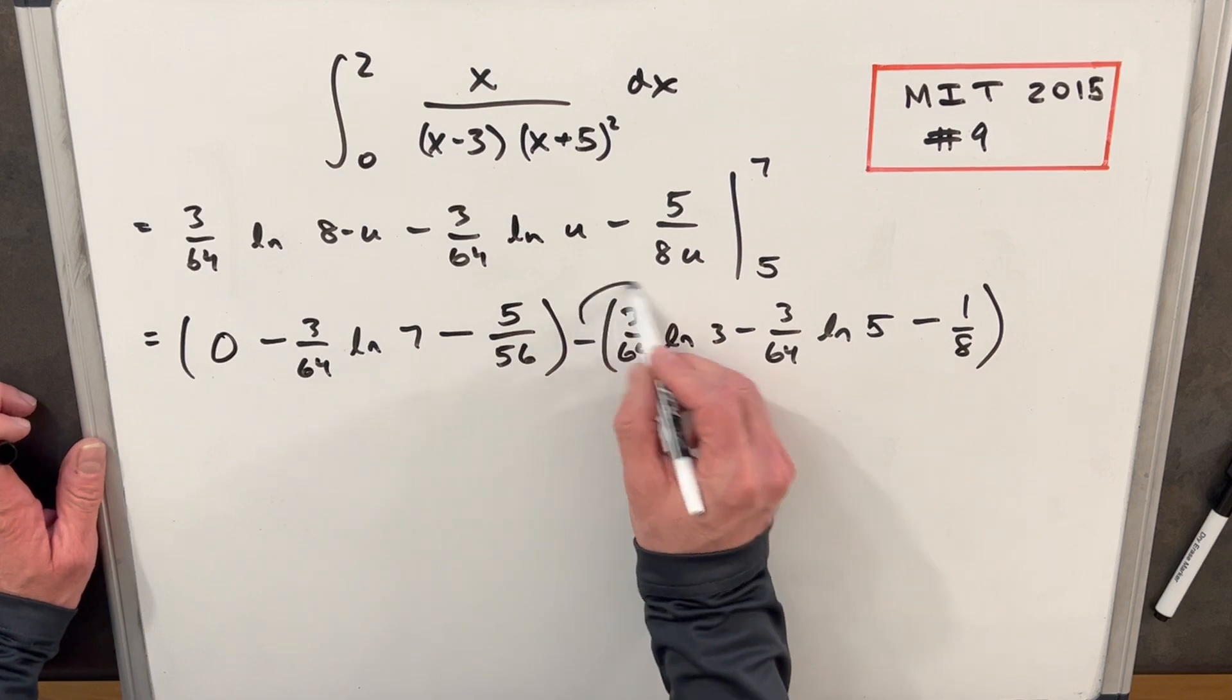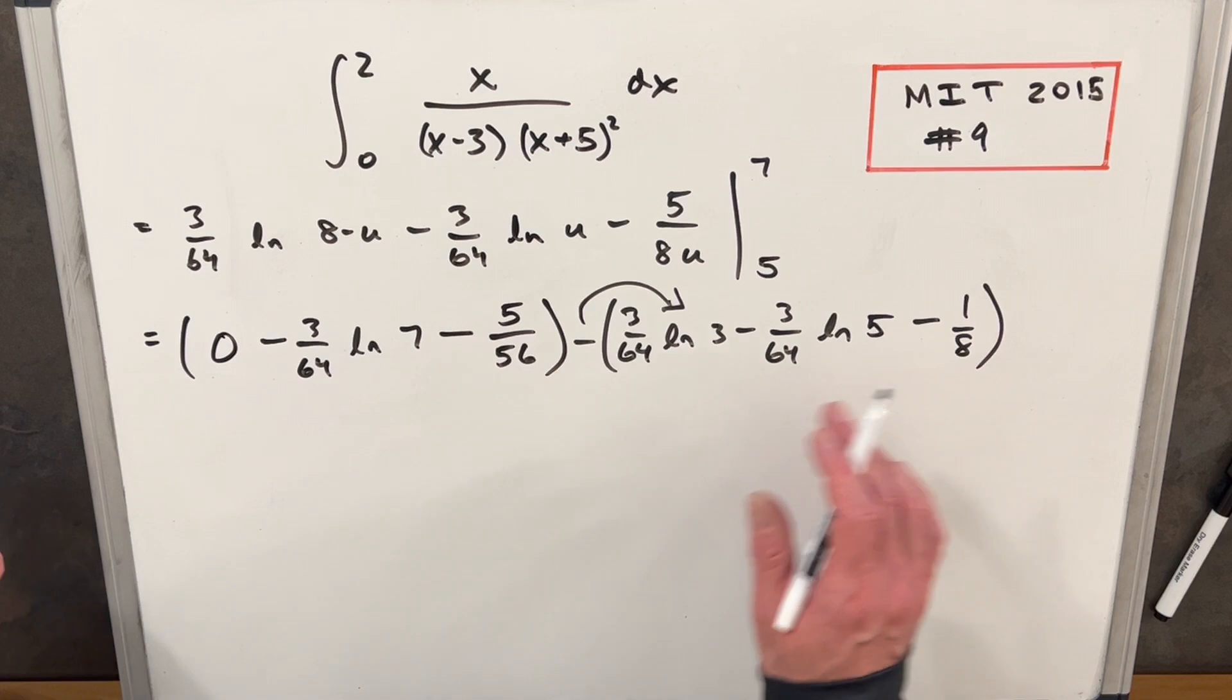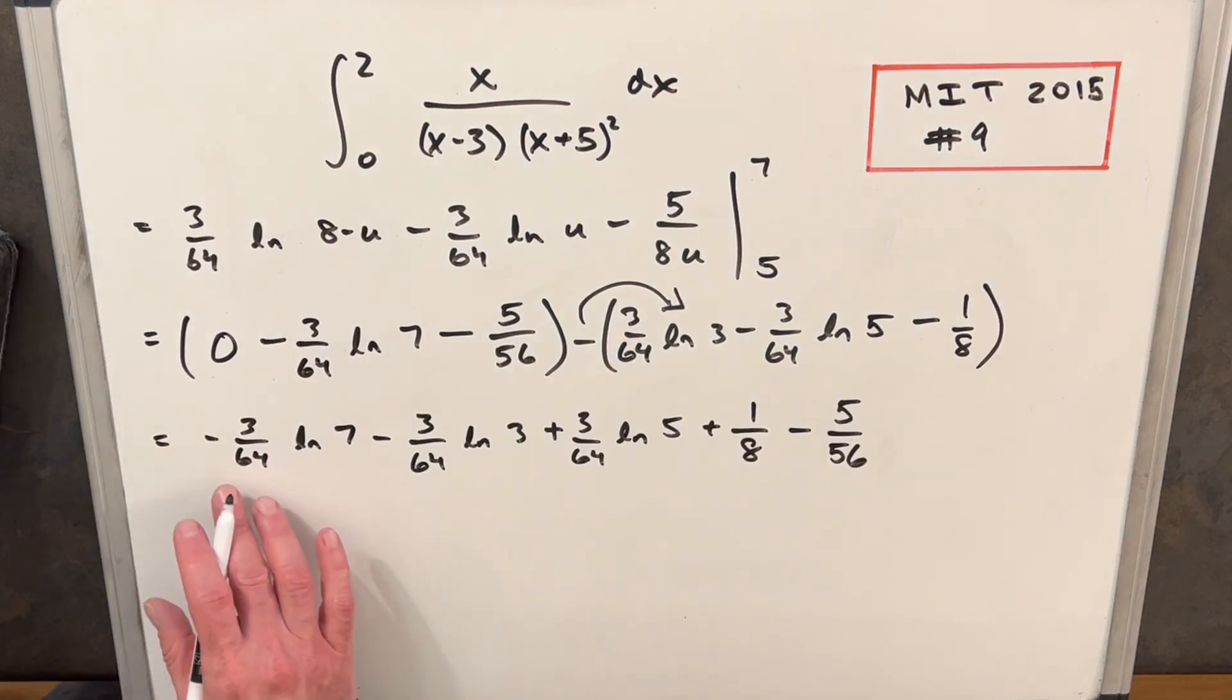Next, I'm just going to distribute this minus sign in here and then I'm actually going to group all the log functions together and all the fractions together. Next, what I'm going to do is I'm going to factor out a minus three over 64 from all of our natural log terms because these first two are negative. So let's just do it that way.